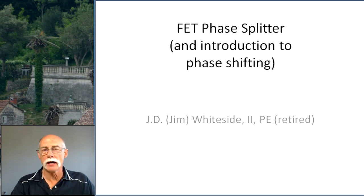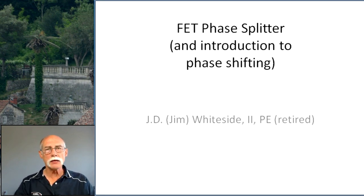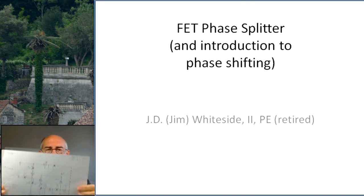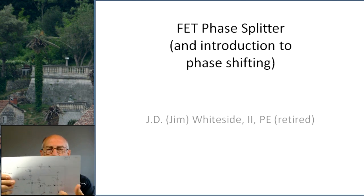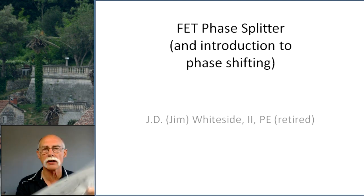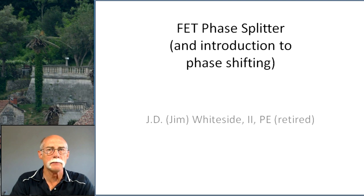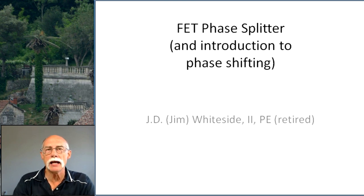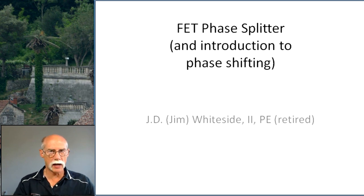Why a FET? Why not a bipolar junction transistor? You can swap them out — a FET can be used anywhere you see a BJT. For example, if you find a circuit online for a noise gate with a couple BJTs, you can put FETs in there and it'll work exactly the same, without changing any of the other components. The difference is that a BJT only passes current in one direction between the collector and emitter, while a FET can pass current in both directions between the drain and the source, giving it more usefulness in general application.